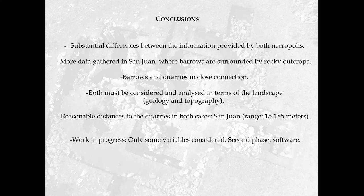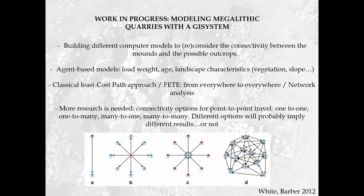This is a work in progress because only some functional variables were considered. During a second phase of our research, we will develop software in order to refine the analysis. Different computer models will be built during further approaches to reconsider the connectivity between the mounds and the possible outcrops using GIS analysis. Agent-based models can introduce additional variables such as loads, age, landscape characteristics, and vegetation slope. This can be done using a classical approach — from everywhere to everywhere — or other network analysis methods.